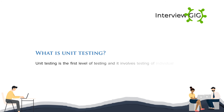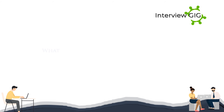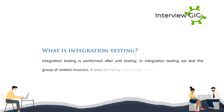What is unit testing? Unit testing is the first level of testing and it involves testing of individual modules of the software. It is usually performed by developers. What is integration testing? Integration testing is performed after unit testing; we test the group of related modules and it aims at finding interfacing issues between the modules.